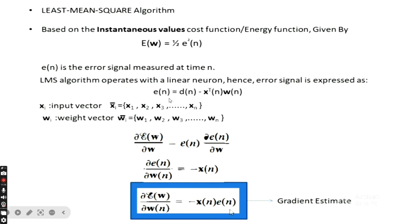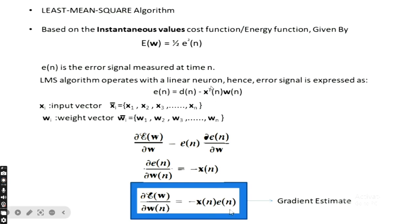The error signal is expressed as E(n) = D(n) − Y(n), where D(n) is the desired output and Y(n) is the current output. The current output is calculated as X^T(n)·W(n) — that is, the input vector at different time intervals multiplied by the weight vector. Xi is the input vector ranging from 1 to n, and Wi is the weight vector ranging from 1 to n.